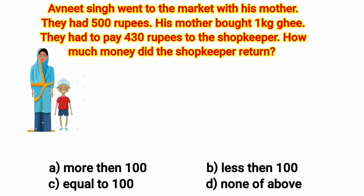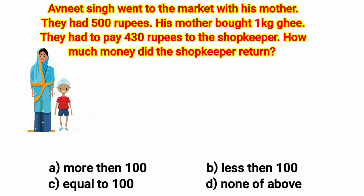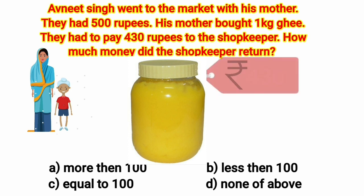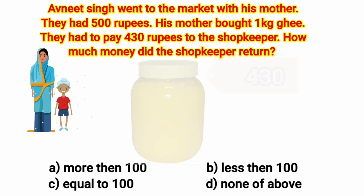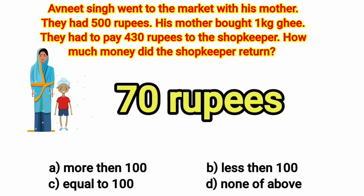How much money did his mother have? She had a 500 rupee note. They bought 1 kg ghee and the cost of ghee was rupees 430. So to return the money, the shopkeeper will subtract 430 from 500 and he will return rupees 70. 500 minus 430 is equal to 70 rupees and 70 is less than rupees 100.